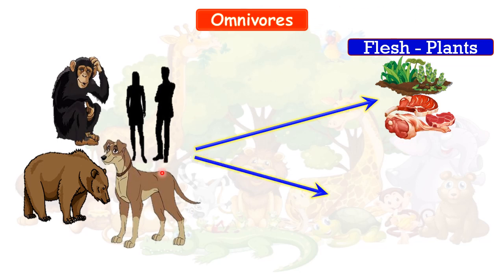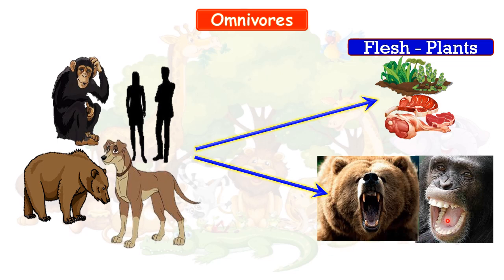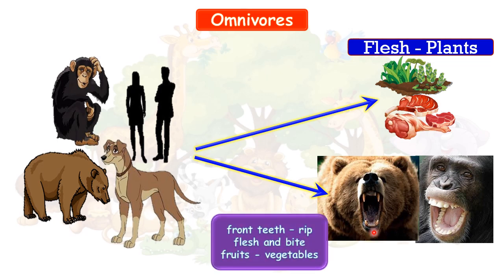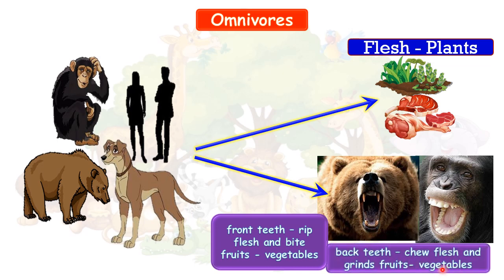Now let's see their teeth structure. Omnivorous animals use their back teeth to chew meat or grind fruits and vegetables, and they use their front teeth to cut meat or to bite fruits and vegetables. So front teeth help them to cut meat or vegetables, and back teeth help them to chew and grind fruits and vegetables.